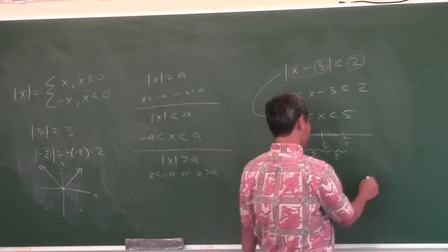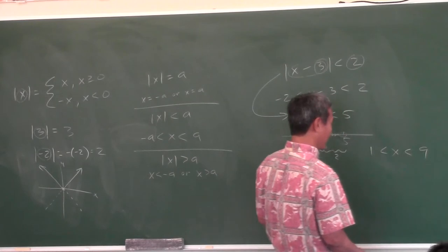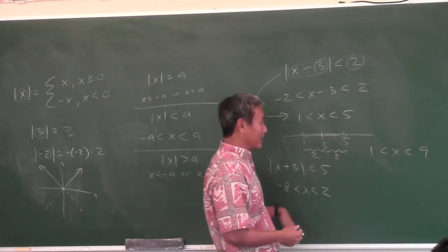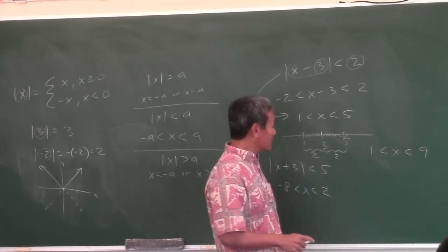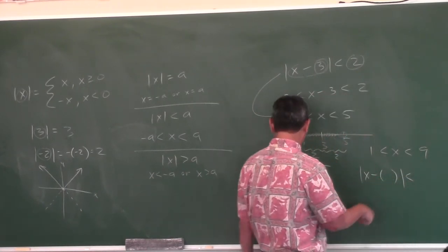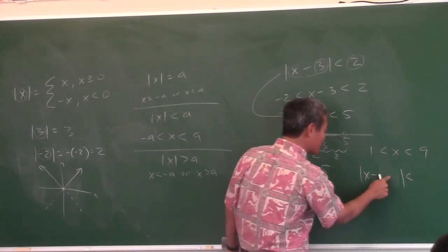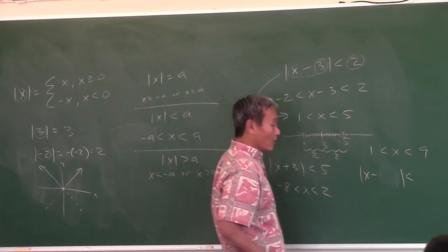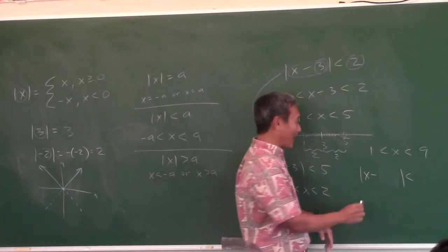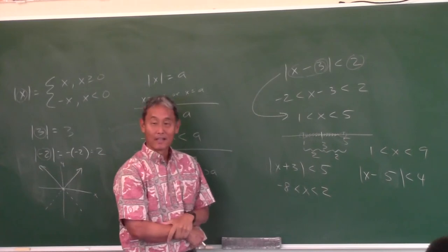I've seen this problem on the SAT: they give you an interval — say x is between 1 and 9 — and ask which inequality represents it. If you don't know anything you'd have to solve all five choices. But now we know the answer is absolute value of x minus something is less than something. What's halfway between 1 and 9? Take the average: 5. And how far is it from 5 to either edge? 4. Boom — absolute value of x minus 5 is less than 4.